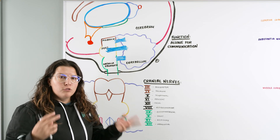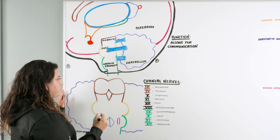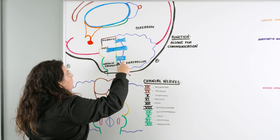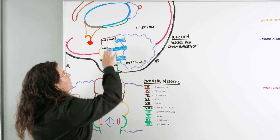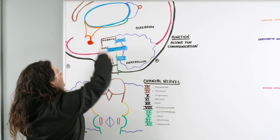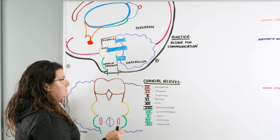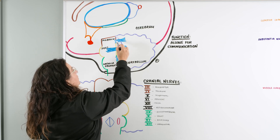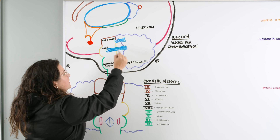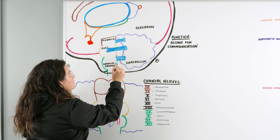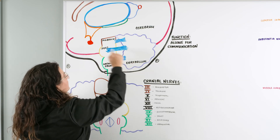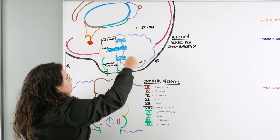We also need to talk about peduncles — the blue structures located within our brainstem. We have three: the superior cerebellar peduncle, middle cerebellar peduncle, and inferior cerebellar peduncle. These are the connections from the brainstem to the cerebellum, allowing fiber nerve tracts to move information in and out — up to the cerebrum, down to the spinal cord. The midbrain has the superior cerebellar peduncle connected posteriorly, the pons has the middle cerebellar peduncle connected anteriorly, and the medulla has the inferior cerebellar peduncle connected posteriorly.